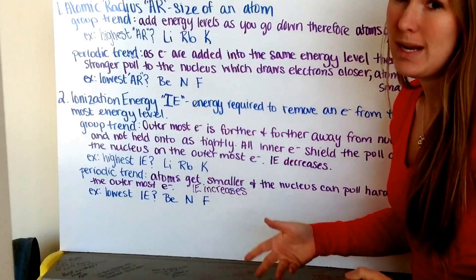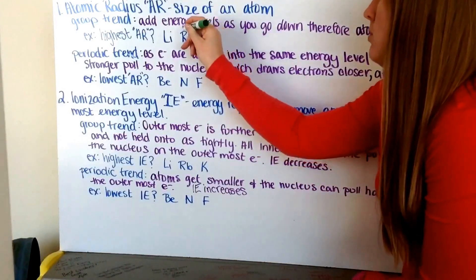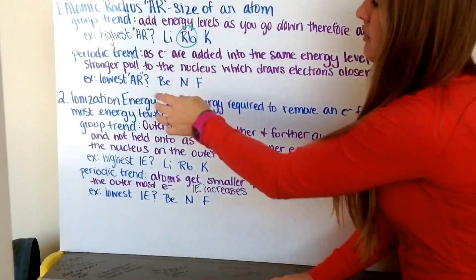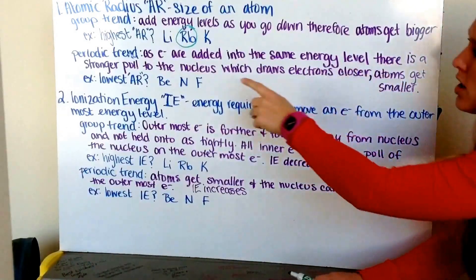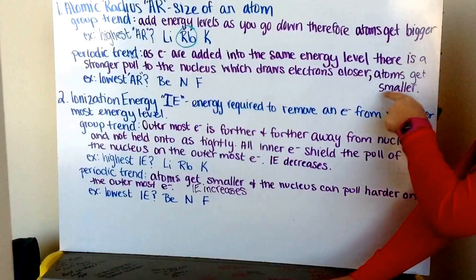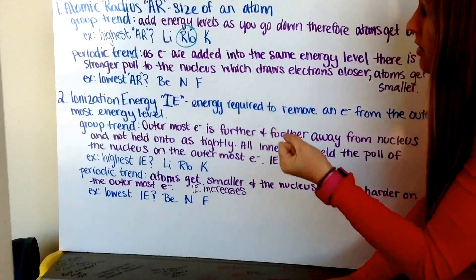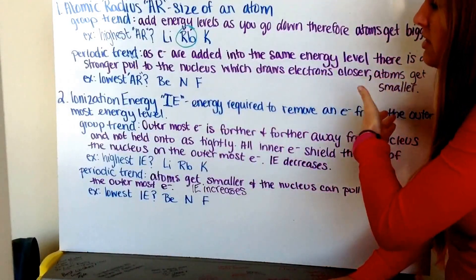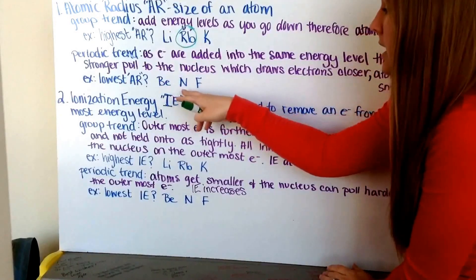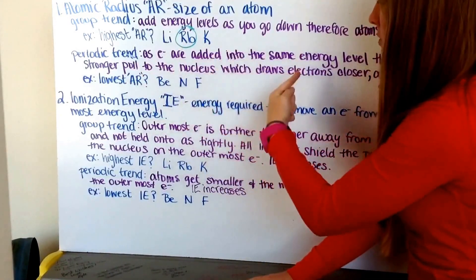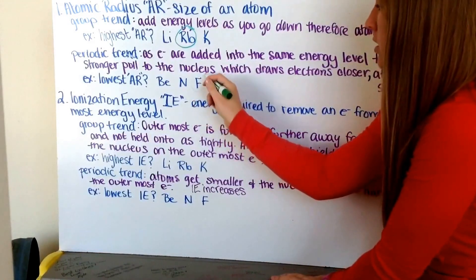Looking at group one — lithium, rubidium, and potassium — which one has the highest atomic radius? As we go down we get bigger atoms, so we find which element is furthest down, which is rubidium. My period trend: as I go across my period, electrons are added into the same energy level, creating a stronger pull to the nucleus which draws electrons closer. Therefore, my atom gets smaller going across. So fluorine is going to be smaller than lithium. For the lowest atomic radius between beryllium, nitrogen, and fluorine, whichever is furthest to the right has the smallest atomic radius — so I circle fluorine.